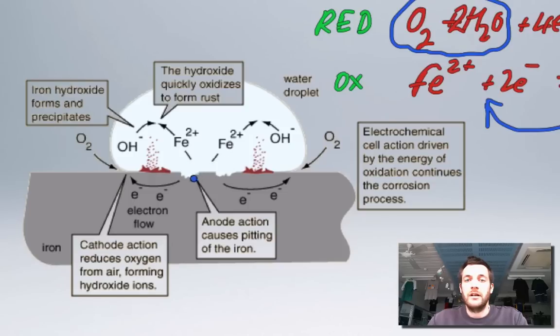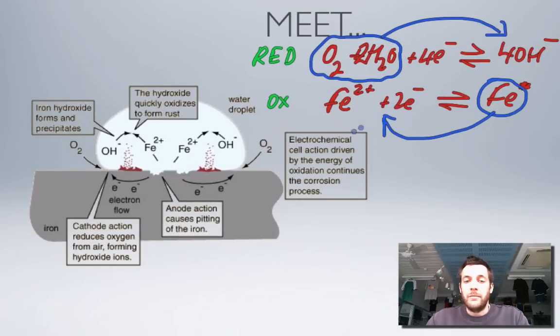The electrons that are being given up by the iron are flowing through the wire, which is actually the iron here because iron is a conductor. The electrons flow around to the cathode.